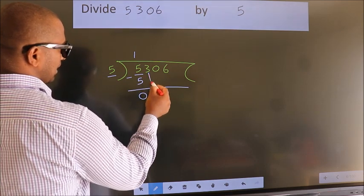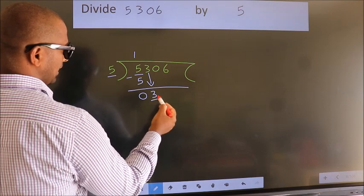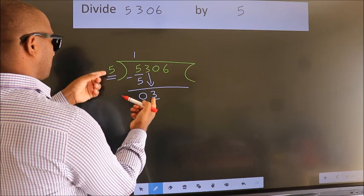After this, bring down the beside number. So 3 down. Here we have 3, here 5. 3 smaller than 5.